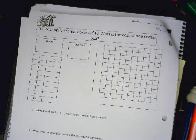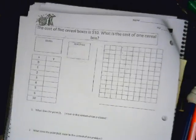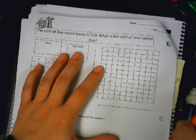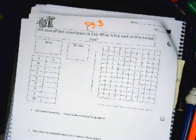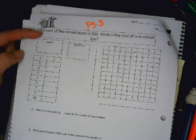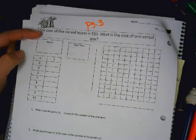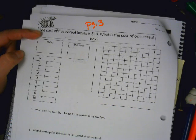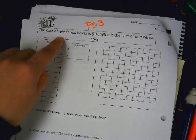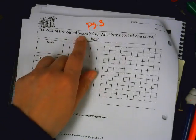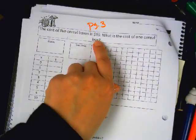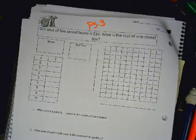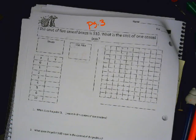All right, we are recording on page three. Go ahead and read this box to yourself, and I'll read it out loud in a second. Okay, the cost of five cereal boxes is $10. What is the cost of one cereal box? So we have five cereal boxes, but I want to know what the cost of one cereal box is.